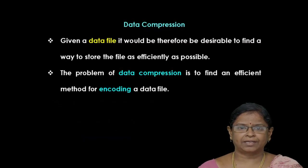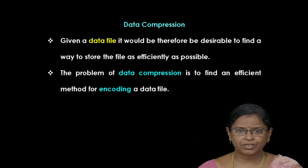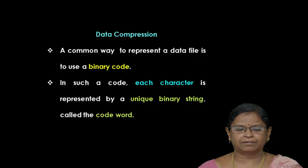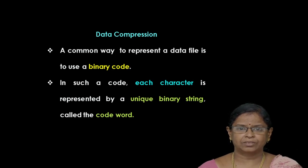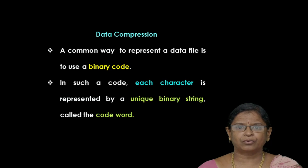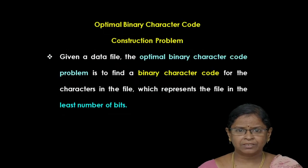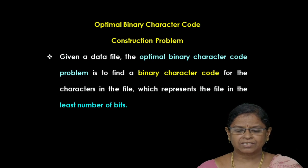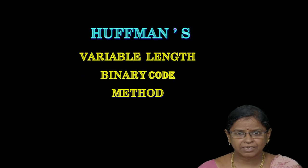We will see about what is data compression. Given a data file, it is desirable to store the file in an efficient manner. The problem of data compression is to find a method for encoding the data file. A common way to represent a text file is in the form of binary character code. Each and every character in the text file is represented in the form of a code word. Our aim is to construct an optimal binary character code where each character has a unique string and is represented with the least number of bits. This can be achieved by Huffman's variable length binary character code.